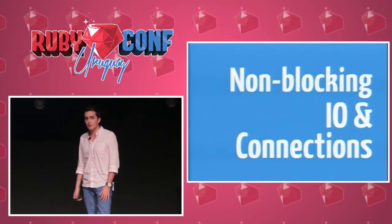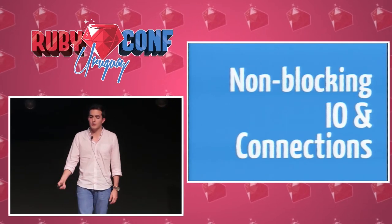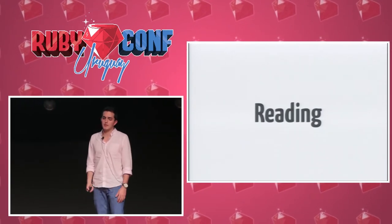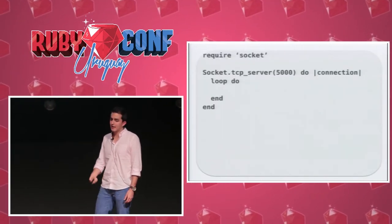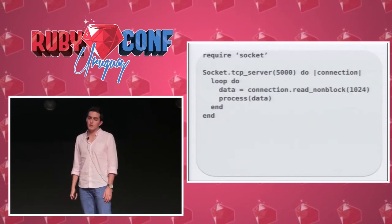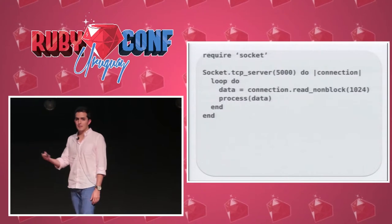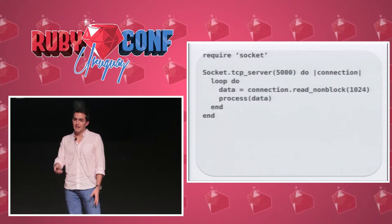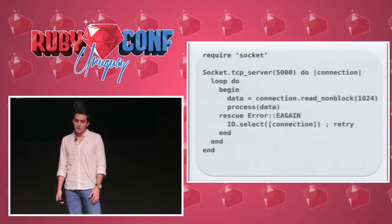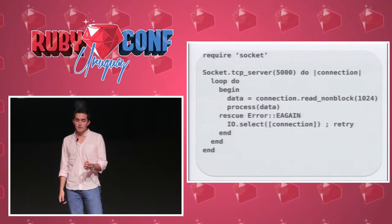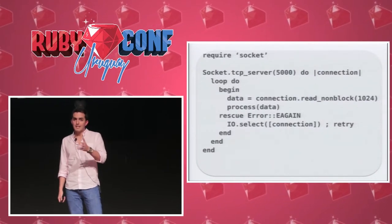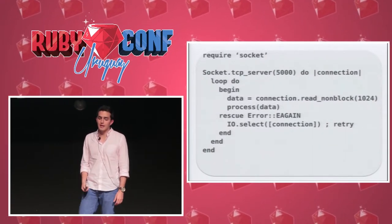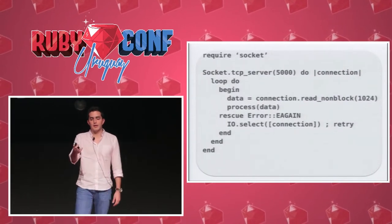What can we do about this? There are non-blocking methods, and Ruby allows us to have bindings to these operating system calls. We have a server with an infinite loop, we start to read non-blocking, and we can process information. When reading non-blocking data, you need to handle an exception called Errno::EAGAIN — we realize we have to receive this and do something about it.